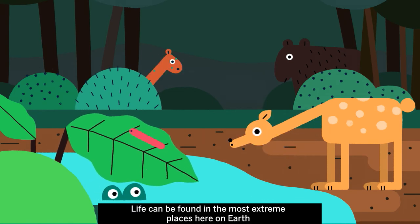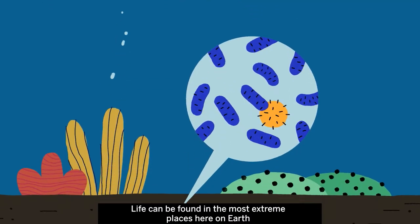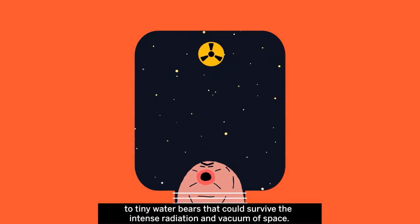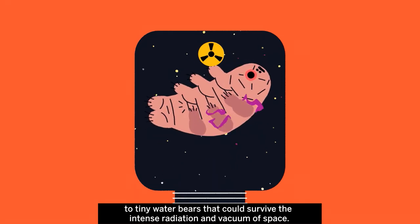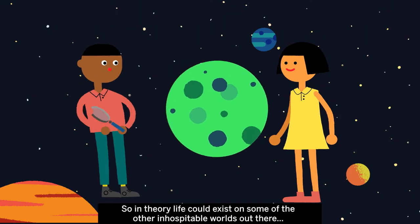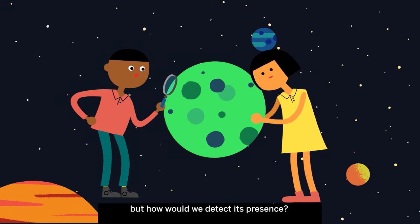Life can be found in the most extreme places here on Earth, from microbes surviving deep beneath ocean floors to tiny water bears that could survive the intense radiation and vacuum of space. So in theory, life could exist on some of the other inhospitable worlds out there.